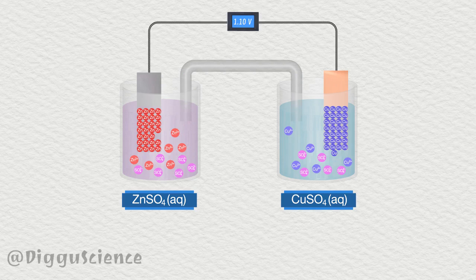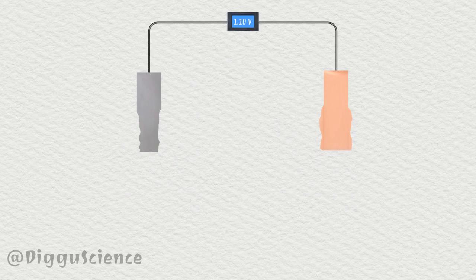This is where the function of the salt bridge is, to neutralize the electrolyte solution. Later, the dipped zinc sheet will become thinner. Meanwhile, the dipped copper sheet will become thicker.